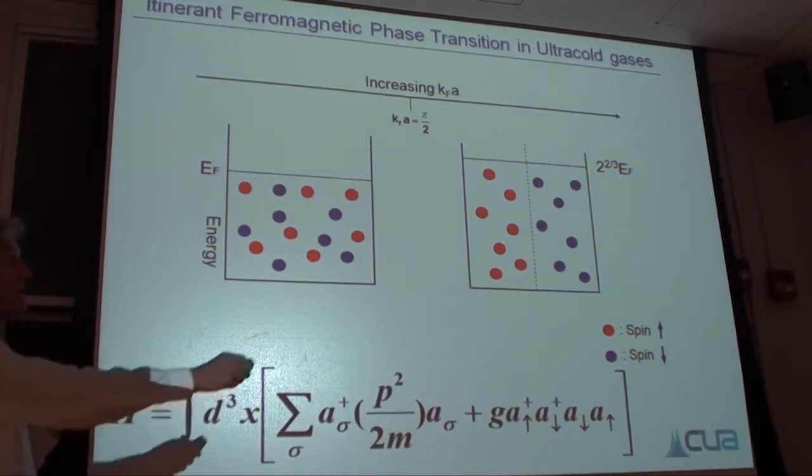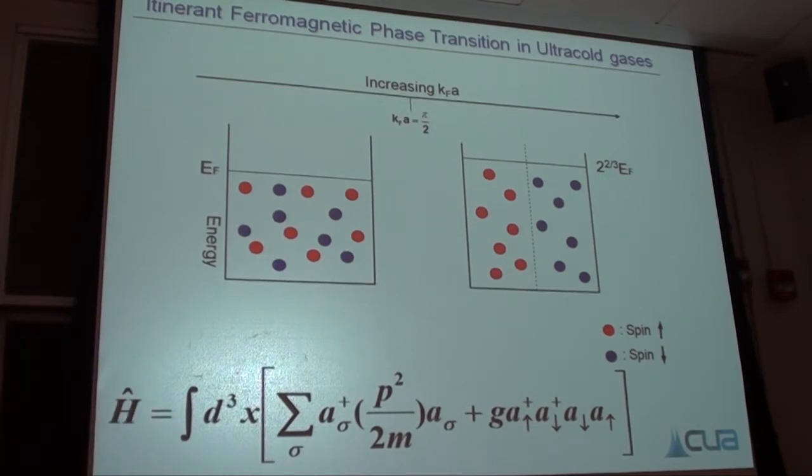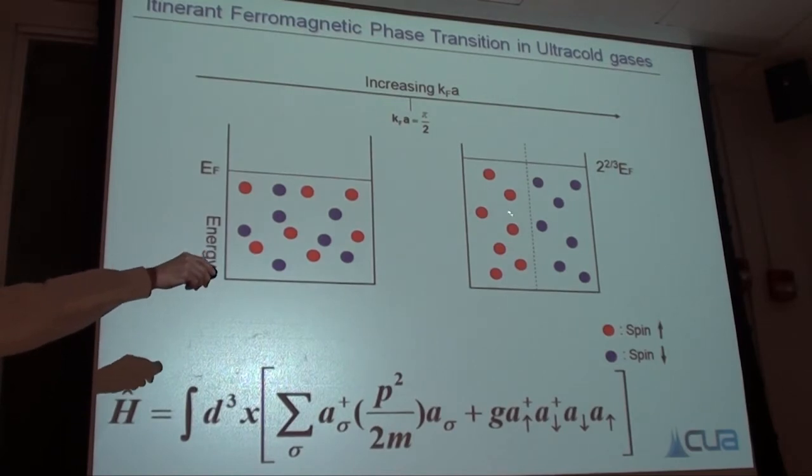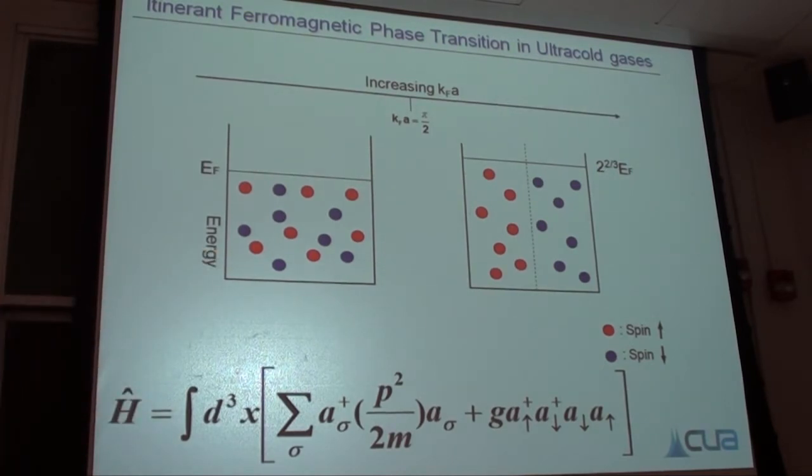In this situation, because red and blue atoms can no longer interact at short range, the repulsive energy is now zero. However, these fermions have paid a price that the local density in each quantum state is two times higher, and that means the Fermi energy has now increased by 2 to the 2/3.